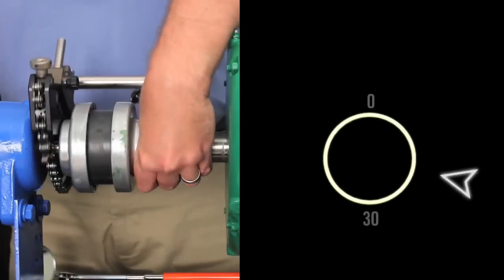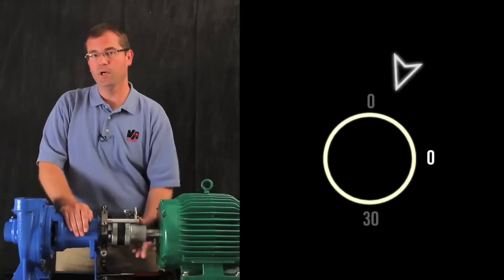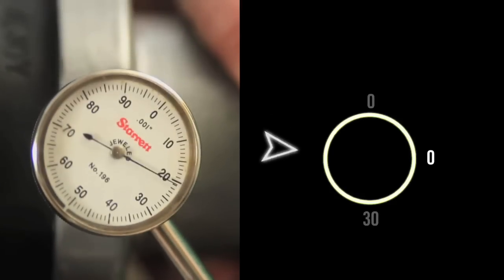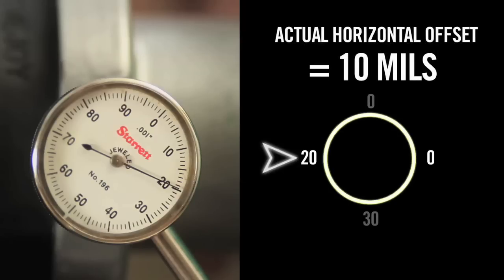The same is true if I zero the dial indicator at 3 o'clock and then roll 180 degrees to 9 o'clock. It reads 20 mils, the TIR, but the actual horizontal offset is half of 20 or 10.